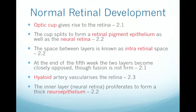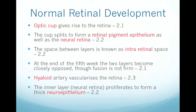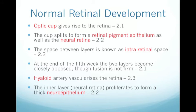Now on to normal retinal development. We're only interested in the development of the retina, because that's the structure impacted by coloboma. The optic cup gives rise to the retina, splitting to form a retinal pigment epithelium and the neural retina. The space between the layers is the intra-retinal space. At the end of the fifth week, the two layers become closely opposed, though fusion is not firm. The hyaloid artery vascularizes the retina, and the inner neural retina proliferates to form a thick neuroepithelium.